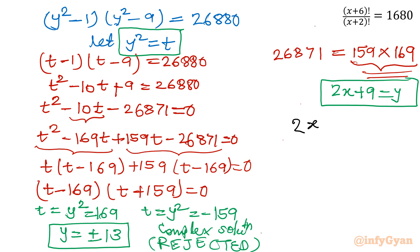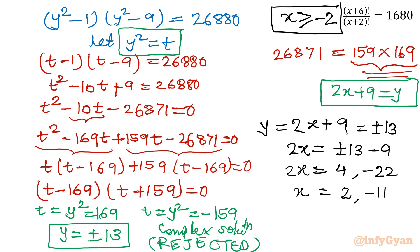Complex solution we cannot accept. Now come to y is equal to plus minus 13 case. So I will consider 2x+9 which is our y equal to plus minus 13. So I can write 2x is equal to plus minus 13 minus 9. If I will consider plus sign then I will be having 13 minus 9 so 4. If I will take minus sign minus 13 minus 9 minus 22. And LHS is 2x so x will become 2 and negative 11. And what was our domain? x greater than or equal to minus 2. This was our domain so negative 11 we will reject because it is less than minus 2. So what is left? x is equal to 2 is our solution.